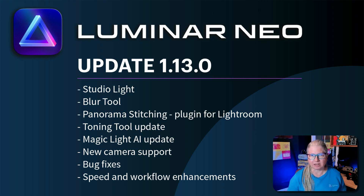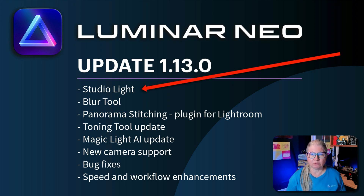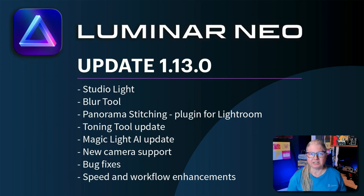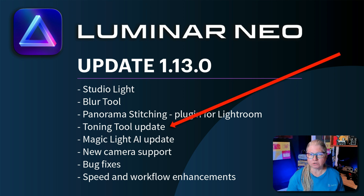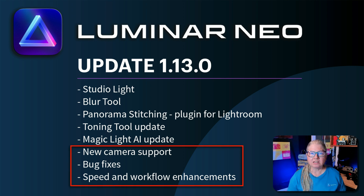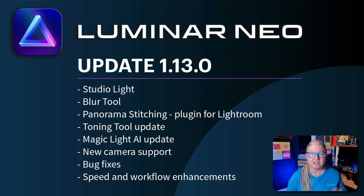First let's take a look at what's included in this update. The previously announced studio light tool has now been shipped, as well as something surprising and also new — a blur tool. Some minor updates include the panorama stitching tool now available as a plug-in for Lightroom, the toning tool and the MagicLight AI extension have had some enhancements. There is now support for additional new cameras, some bug fixes, and some general enhancements. I'll put a link to the what's new page on the Skylum website in the description below.